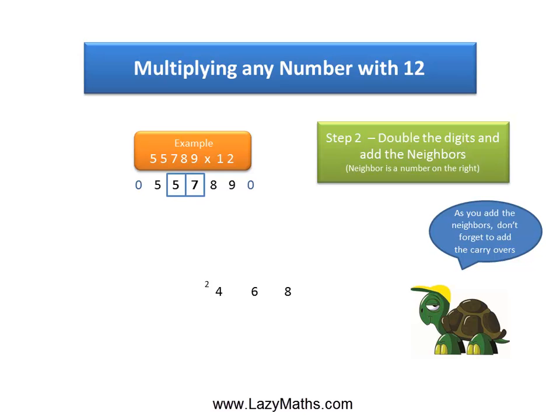Continuing with the next set, 5 and 7. Double of 5 is 10 plus 7 gives us 17. And then again, we add the 2 from 24, which is in the carryover position, to the 7 to make it 9. So we now have 19.